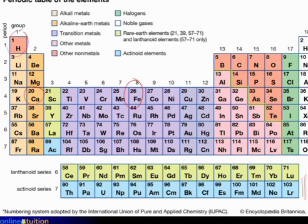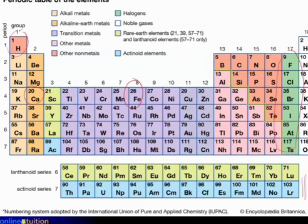There will be others like the group 7 elements. Does anyone know what they're called? The halogen group — excellent! That's a very important group. As I go through today's lesson I'll keep referring to the periodic table. Let's go back and introduce a very important concept: the mole.